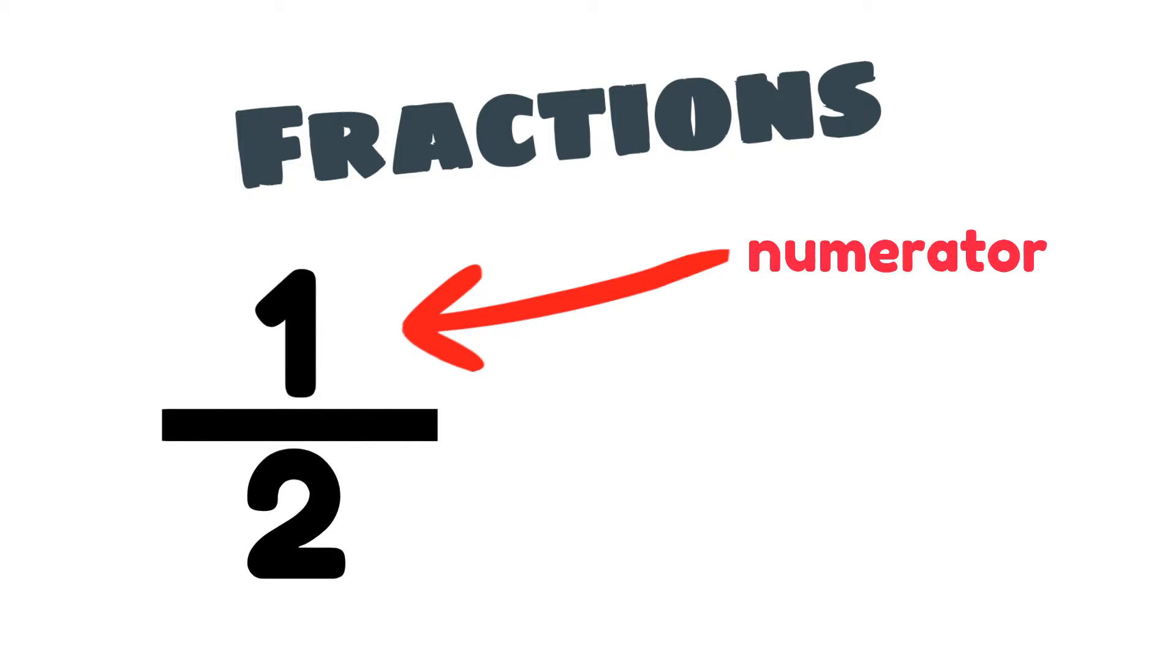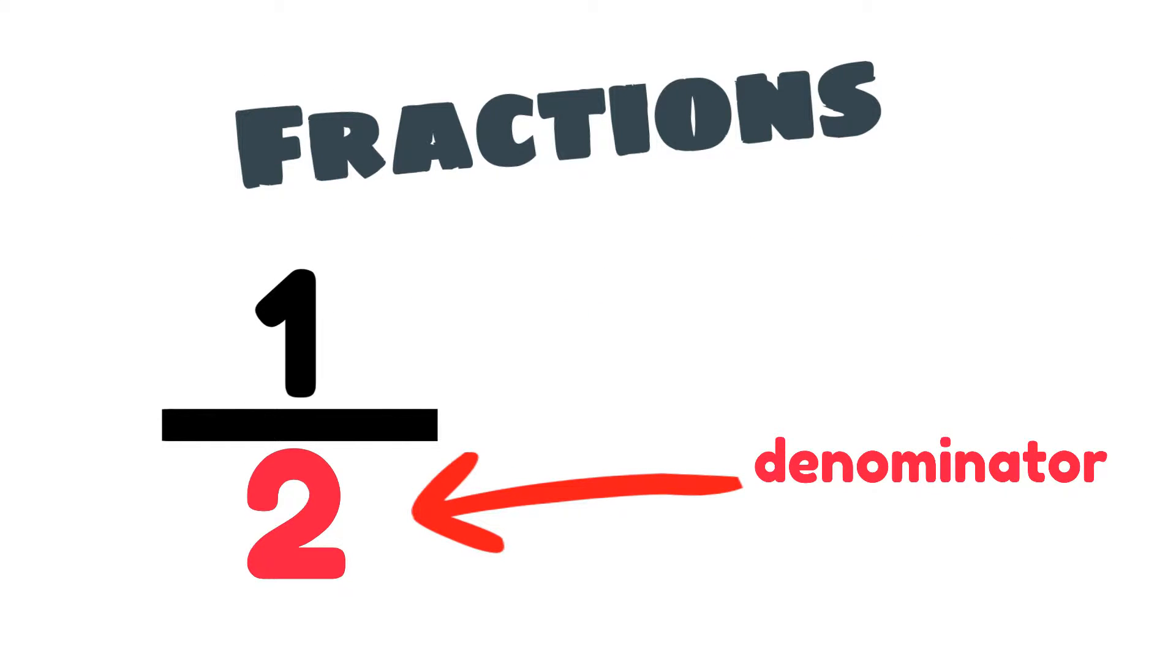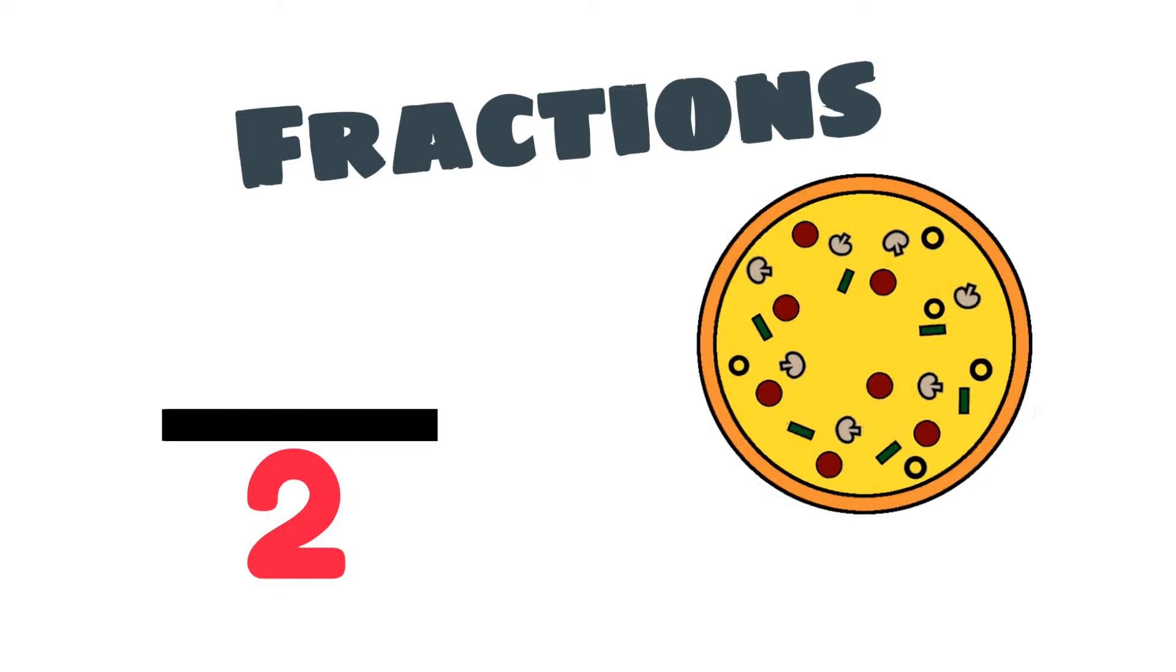A fraction has a numerator and a denominator. The denominator tells us how many equal parts the whole has been divided into. The denominator in this fraction is two, so it tells us that a whole has been divided into two equal parts.